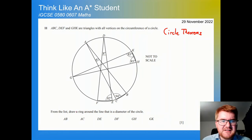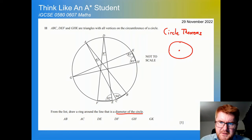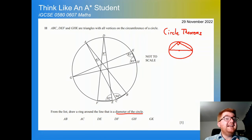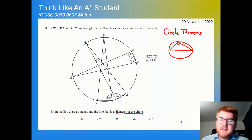So from this list, draw a ring around the line that is the diameter of the circle. That's the next thing I notice. Now I'm going to link these two things together: circle theorems on one hand and diameter on the other. And I'm going to think to myself, what circle theorems do I know that involve a diameter in some way? The first one that comes to mind is when we have a diameter, if we take two lines that come from the circumference, they always meet at 90 degrees.